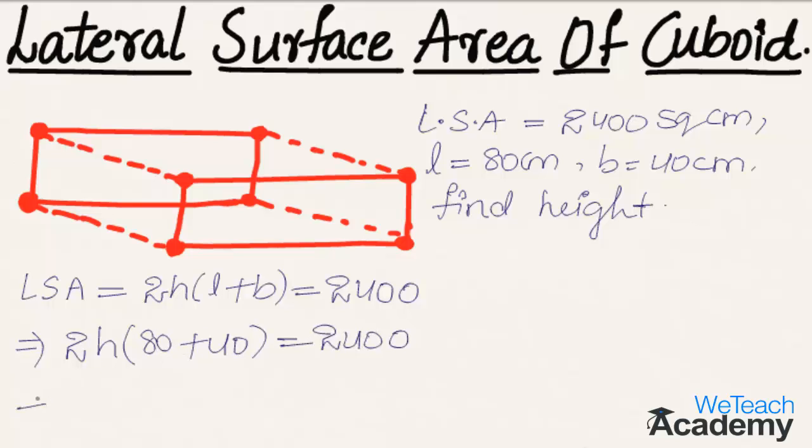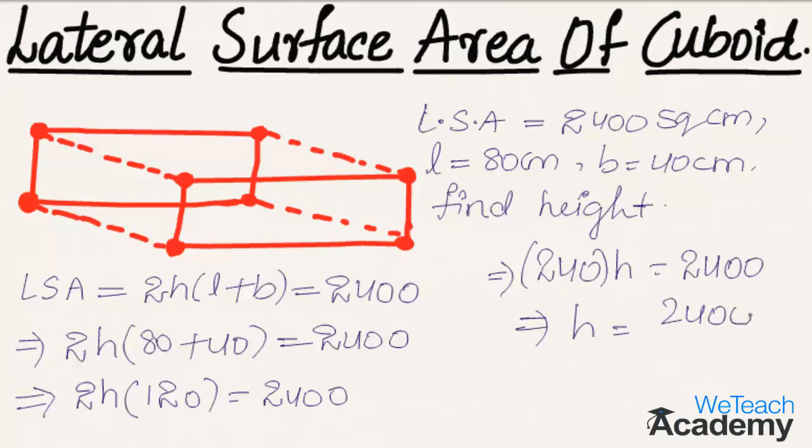That implies by adding we get 2h into 120, which equals 2400. Then by multiplying 2 and 120, we get 240h equals 2400. Transferring 240 to the right hand side, we get h equals 2400 divided by 240.